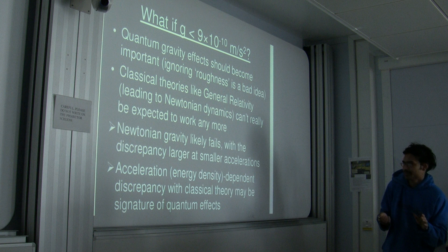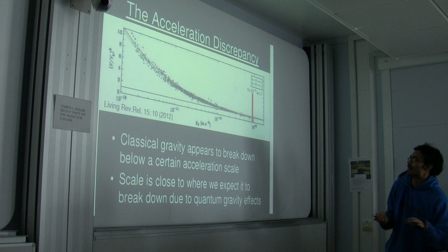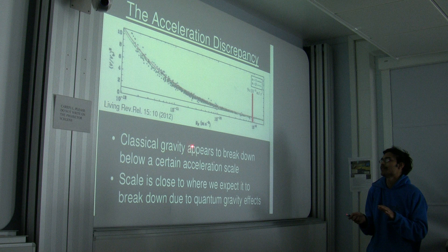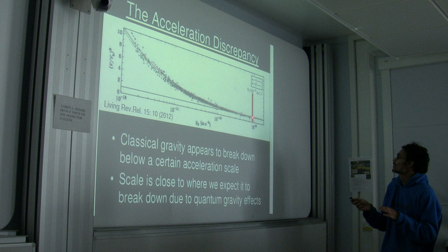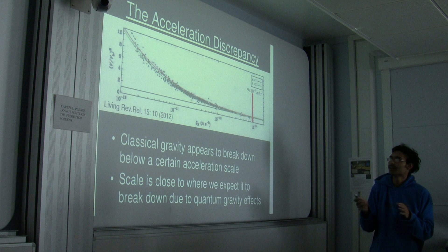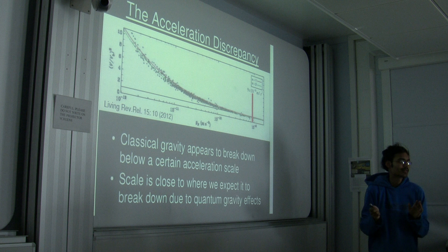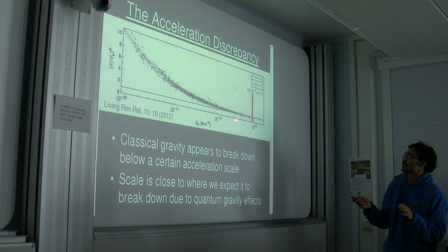Classical gravity appears to break down below a certain acceleration scale. If you plot why it should break down because of quantum gravity effects, you get the correct order of magnitude. The solar system would be at about one meter per second squared — way above this scale — so there's no laboratory experience showing how gravity actually works here; this is just data from galaxies. But this might be a signature of quantum gravity.